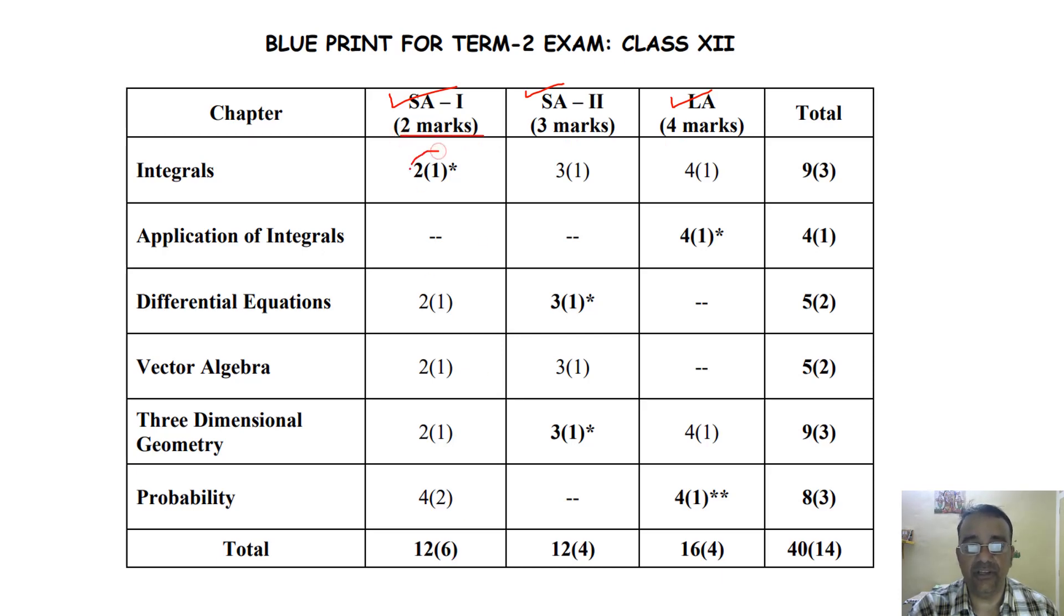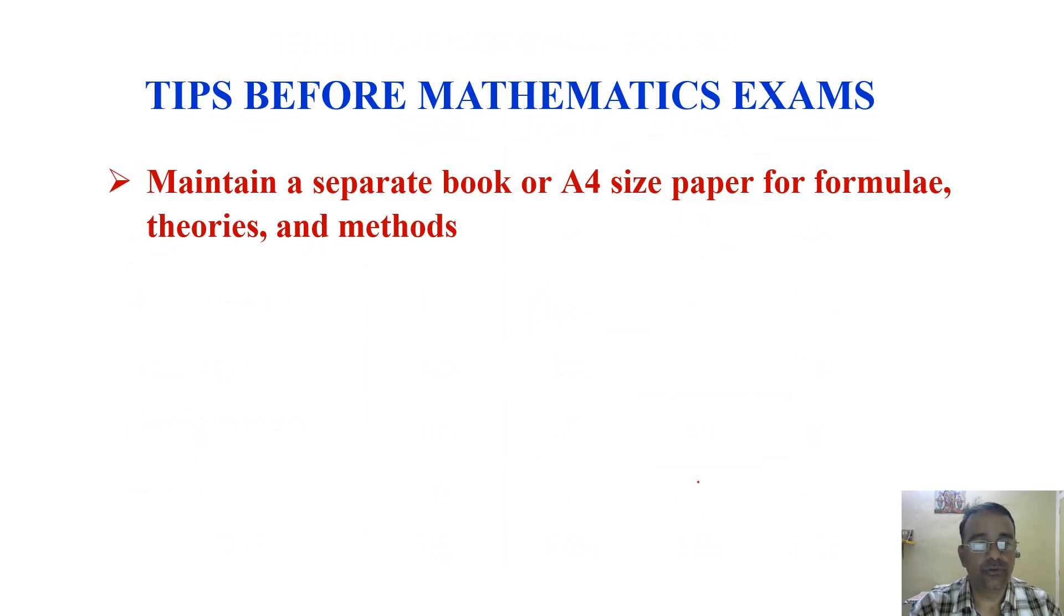In which 6 questions and each question has internal choice. And the second section, Section B, 3 marks each question. And in this two questions you will get internal choice. And in question number 4 you will get only one question and there is only one case study based question and that is given from probability. So that is not sure that you will get case study question from probability but it is almost sure that the question will come from probability.